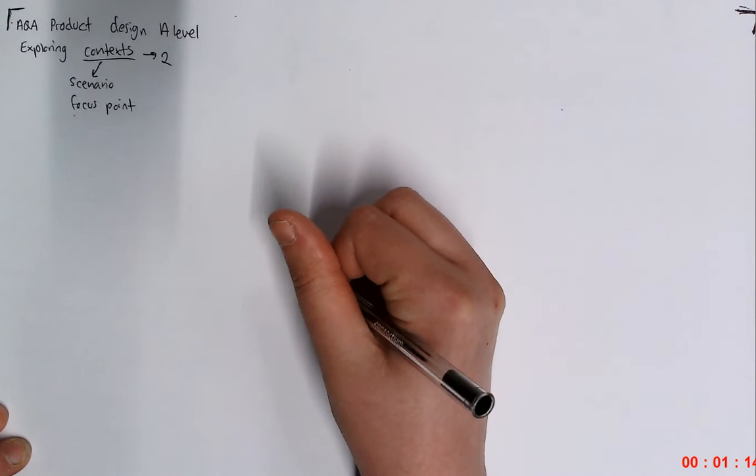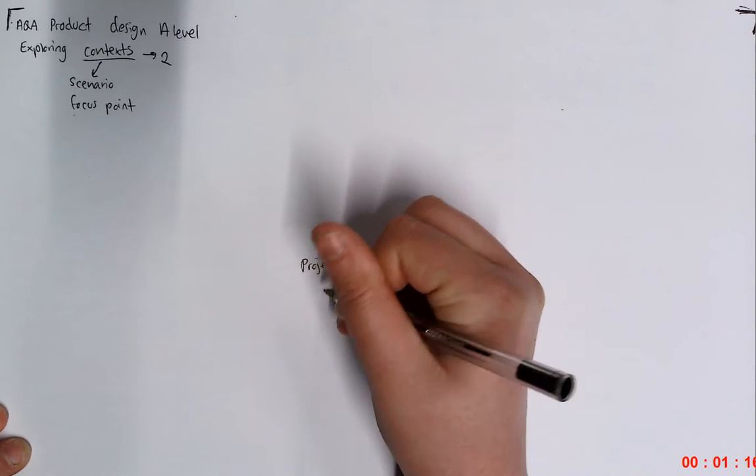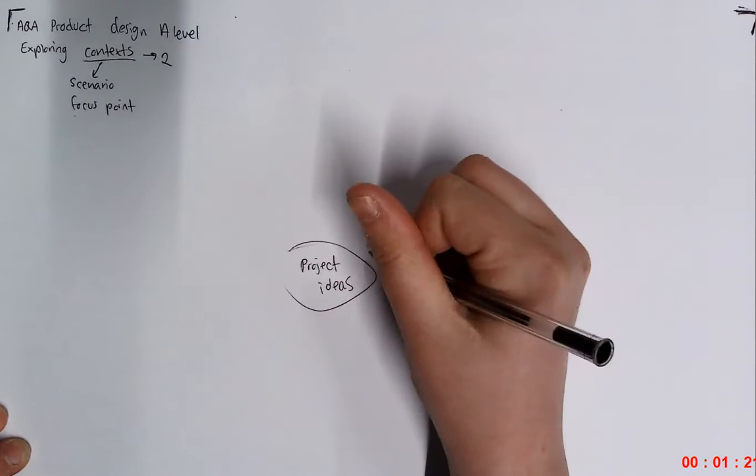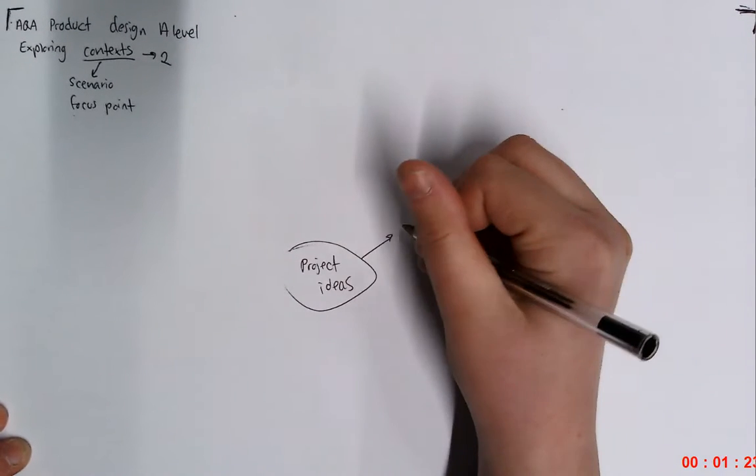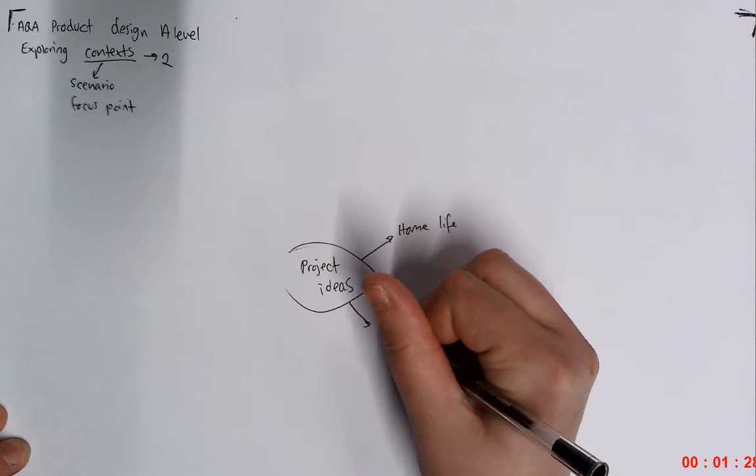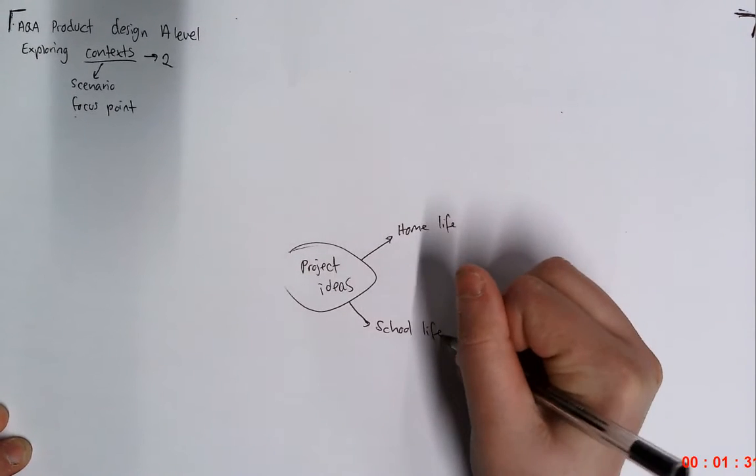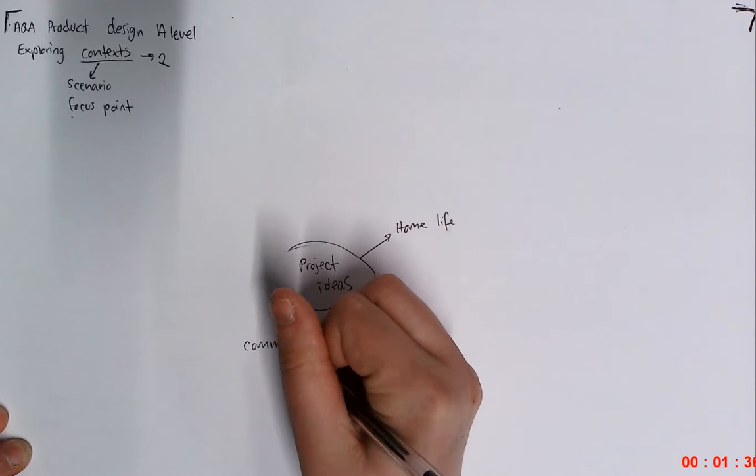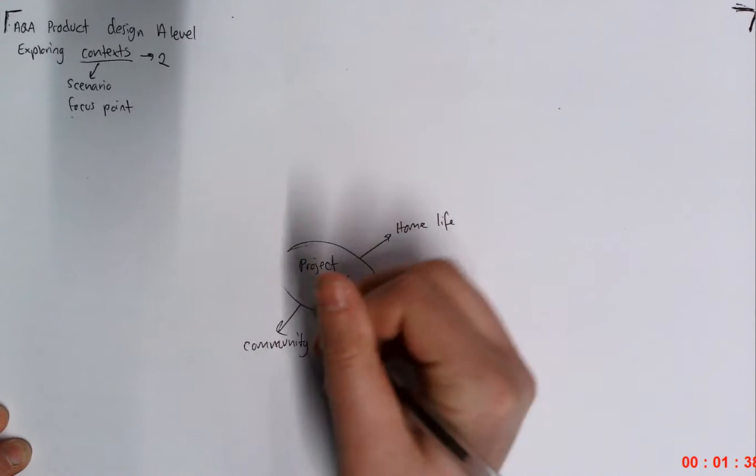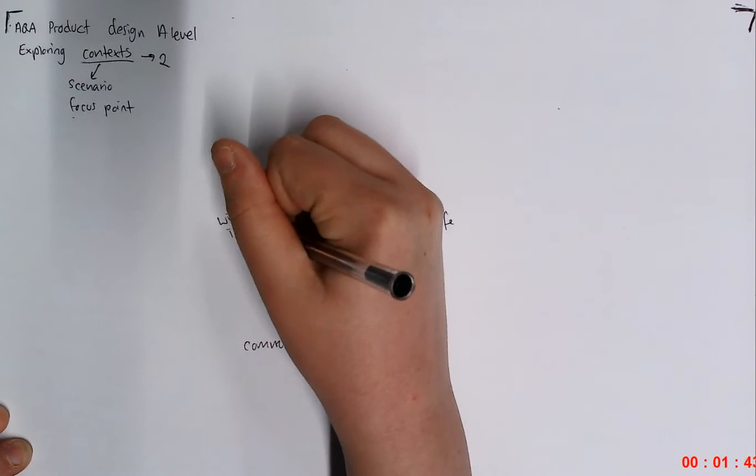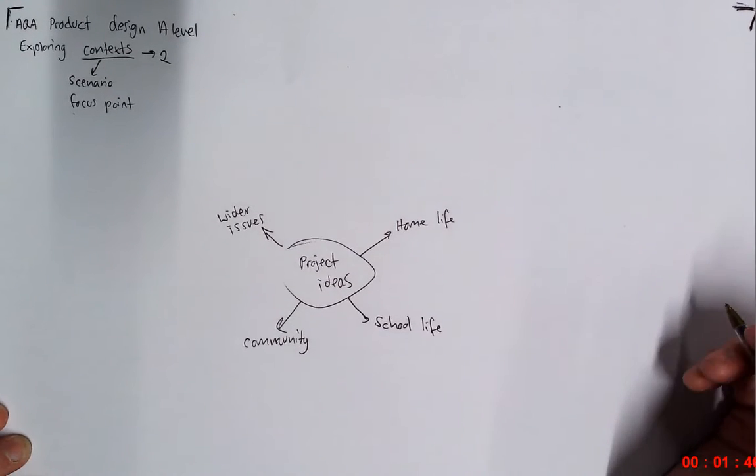So the way I like to start is, I do love a mind map. And all I put in the middle is project ideas. Really nice and simple. Now, in order to help me out, I'm going to think about my home life. I'm going to think about my school life because that's where I spend most of my time when I'm not at home. I'm also going to think about my local community. And I'm also going to think about wider world issues or wider issues within society that I could potentially help out with.